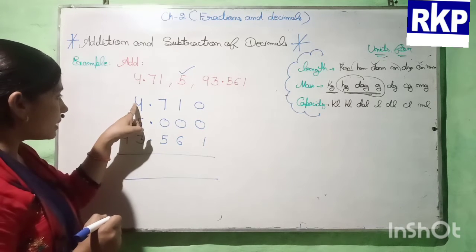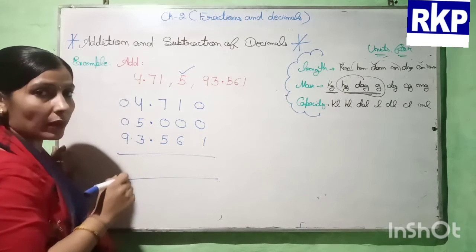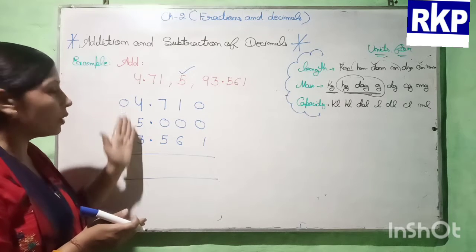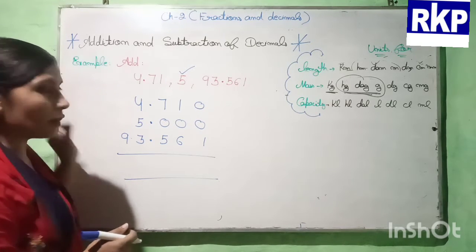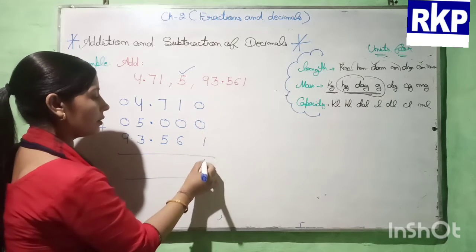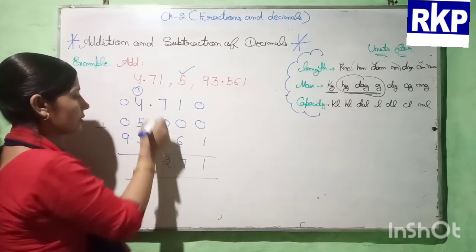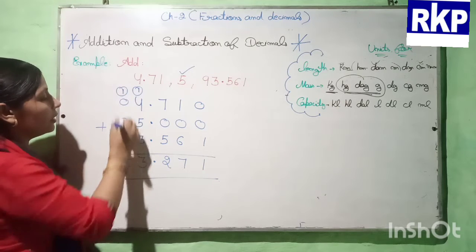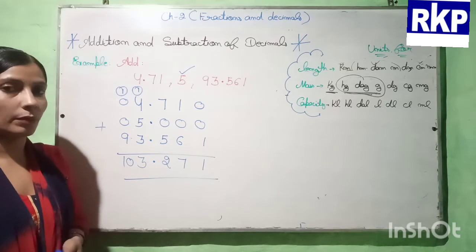Here we have only one digit as the whole number part, and here two digits, so we can put a zero before the whole number part — but even if you do not write it, the answer will be the same because there is no value of zero before the whole number. Now we add: 1 and 6 is 7, 7 and 5 is 12 carry 1, decimal point, 1 and 1 and 4 is 6 — wait — continuing: 1 carry, 10 and 3 is 13 carry 1, 1 and 9 is 10. So 103.271 is the answer.